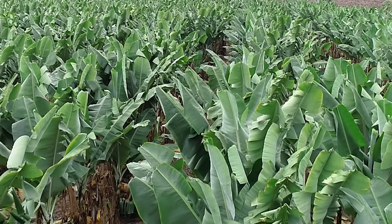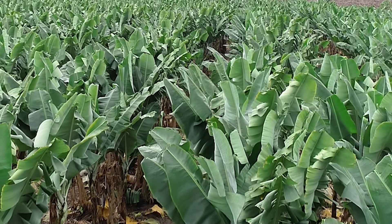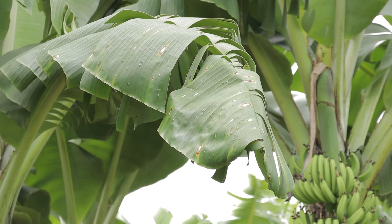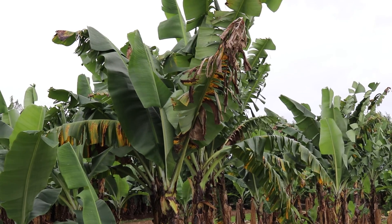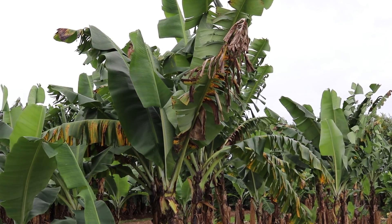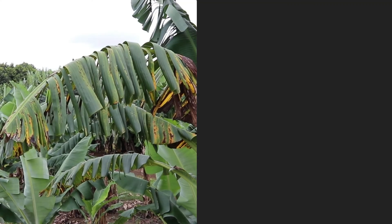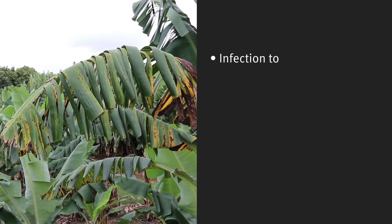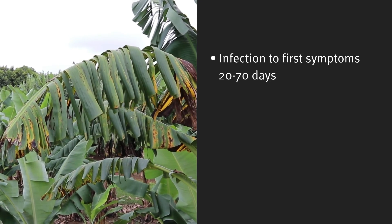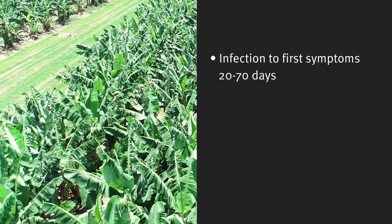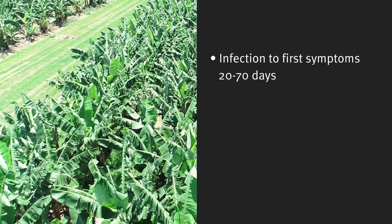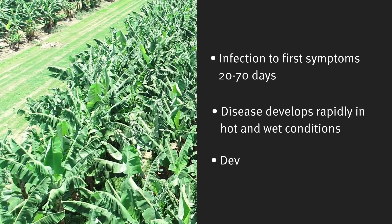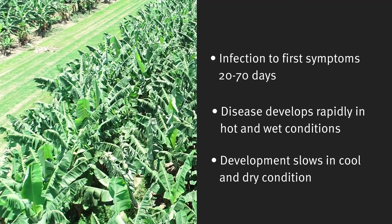The time it takes for the disease to develop depends on environmental conditions, the susceptibility or resistance of the variety, and the intensity of infection. Generally, the period from infection to first symptoms can be 20 to 70 days depending on temperature and moisture. The disease develops more rapidly during hot wet conditions and takes longer during cooler drier conditions.